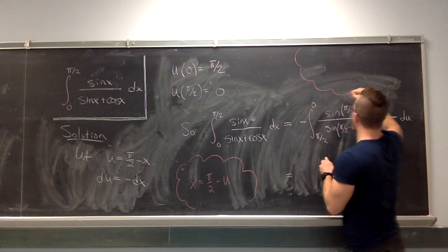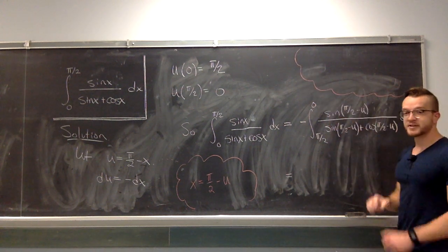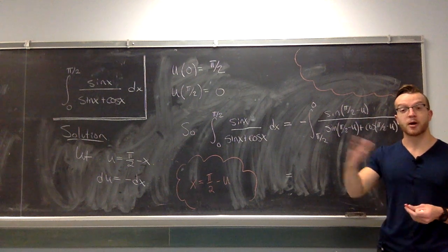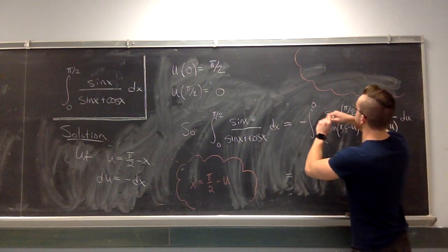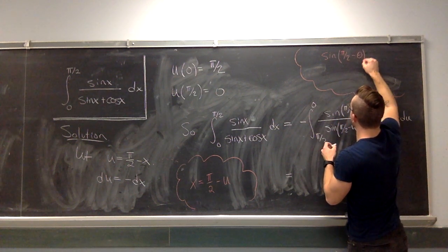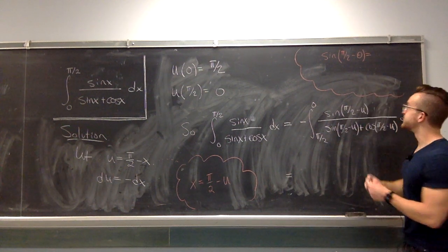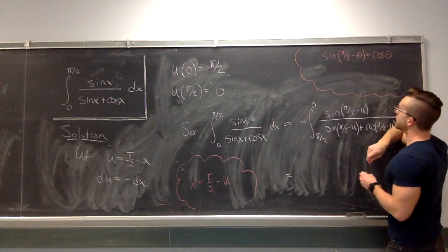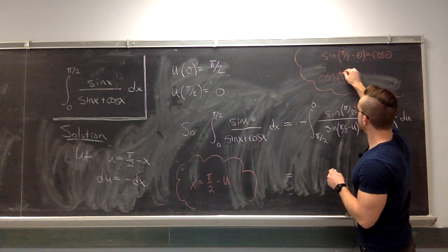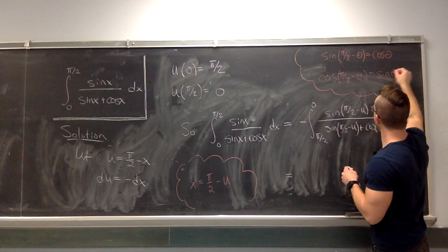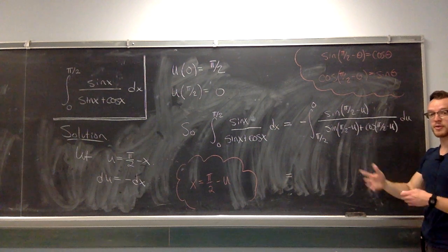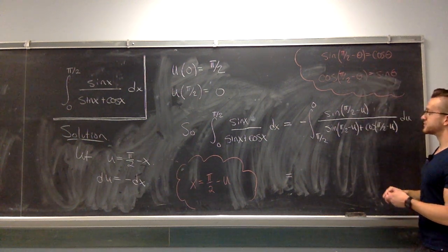Think back way, way, way back to high school or whatever when you learned about trig functions. Sine and cosine are almost the same thing. They're just shifted. If you think about the graphs, they look exactly the same up to a shift. And the relevant fact was that sine of π/2 minus θ, this is cosine. They're the same thing. And likewise, cosine of π/2 minus θ is sine of θ. So these expressions here, we can actually just turn back into more normal-looking expressions via these identities. So let's do that.